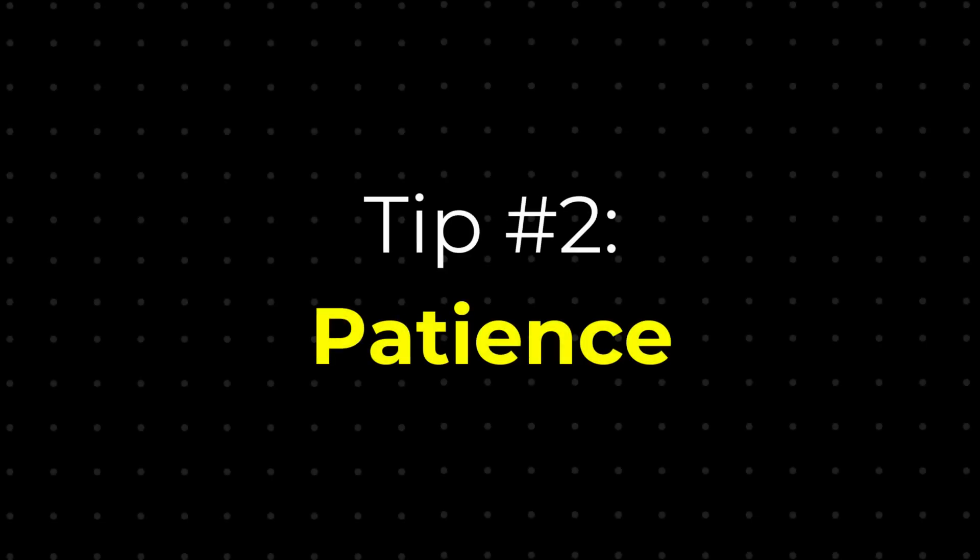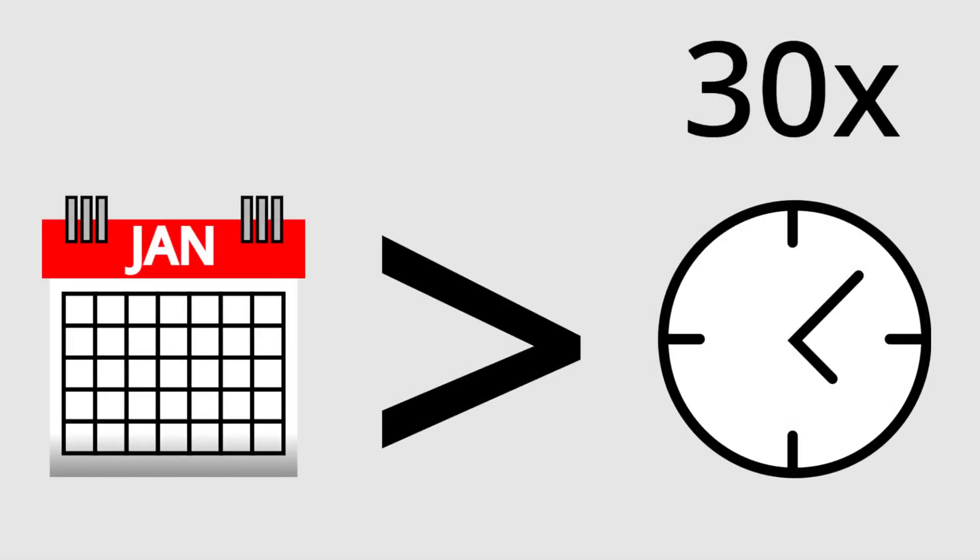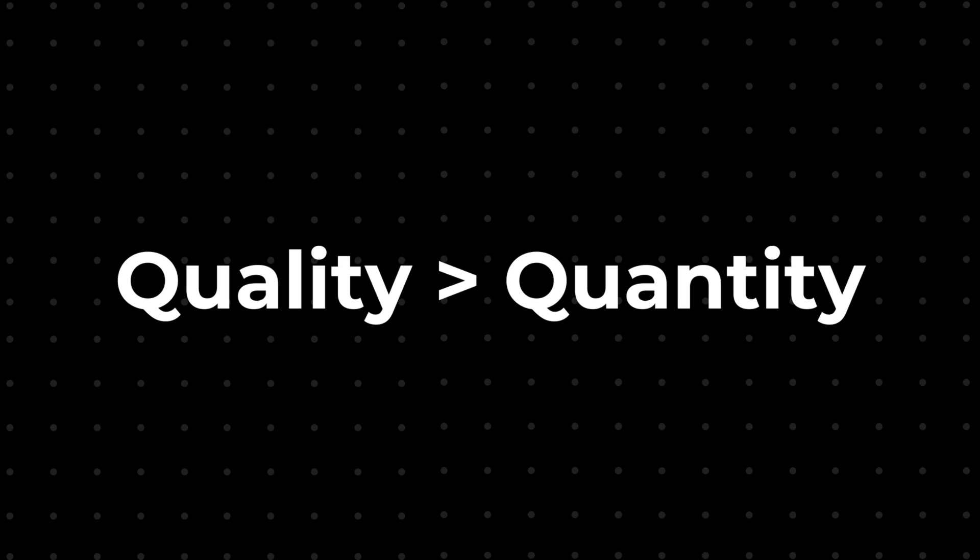The second super important thing to do to go viral is patience. While it may be tempting to try to make lots of products in hopes that they go viral, it's a way better idea to spend more time on a single excellent game. Quality over quantity is a great rule of thumb to follow.